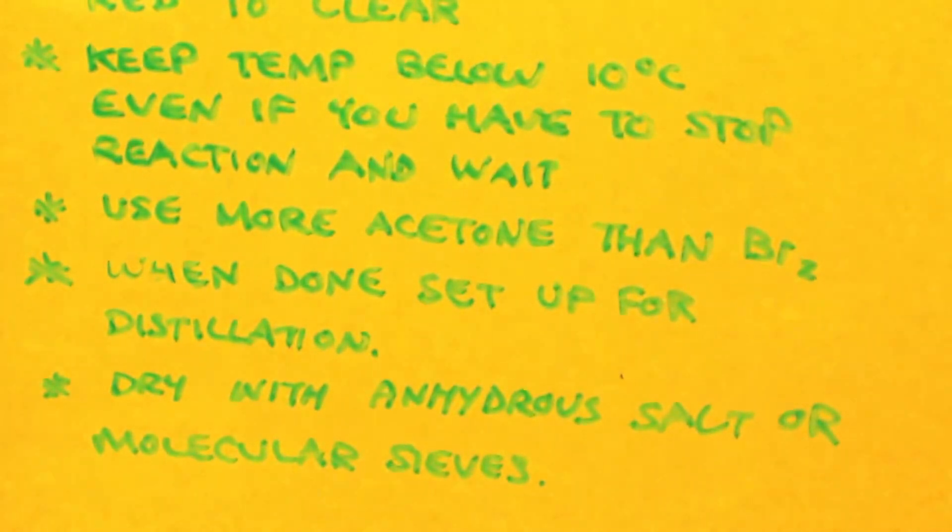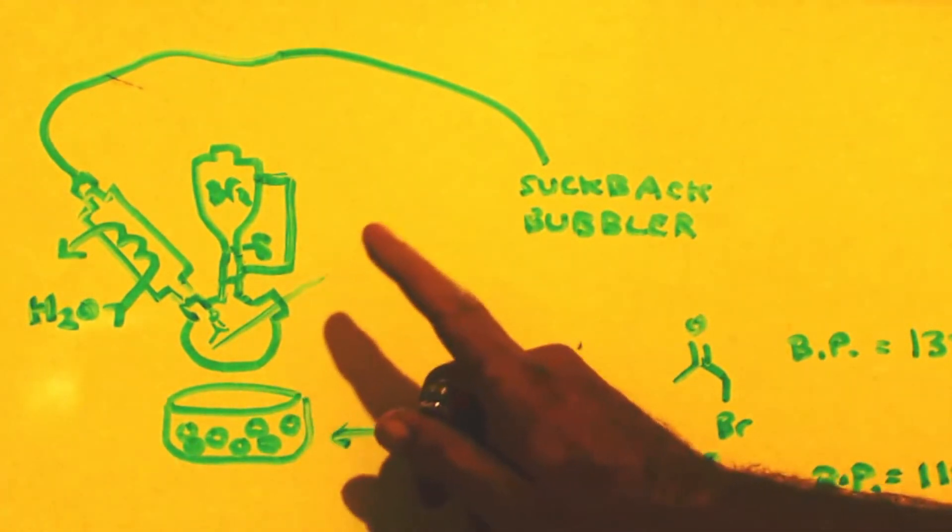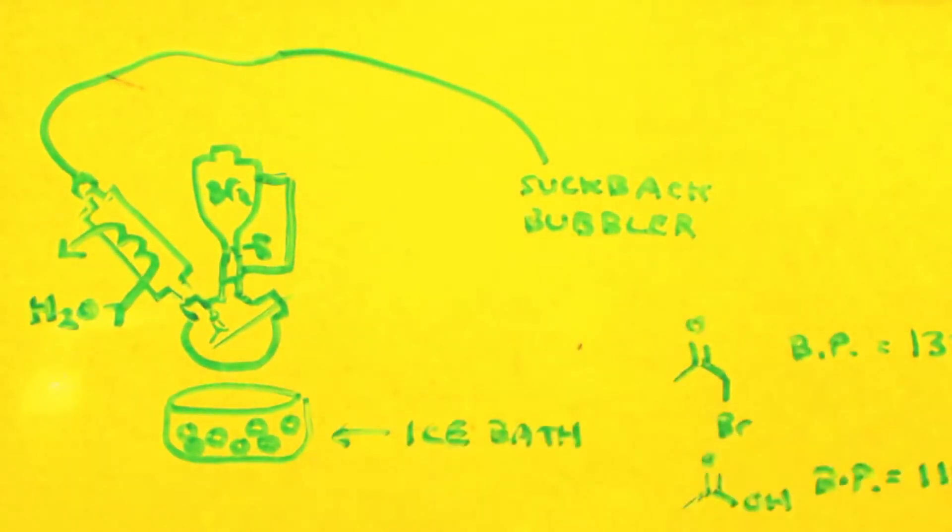When you're done, you might want to wash it with some water to get out any sulfuric acid that's in there. I'm guessing that bromine is not that soluble in water, it's only slightly soluble. So what I would do when I was done was I would put some water in here and throw it into the separatory funnel.